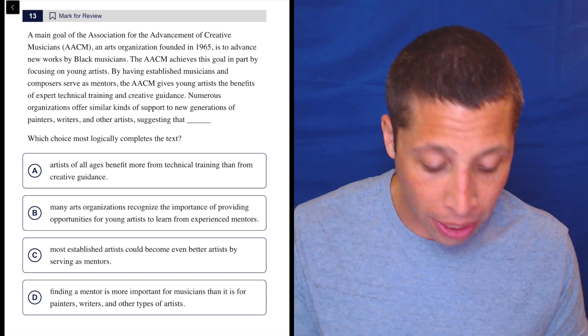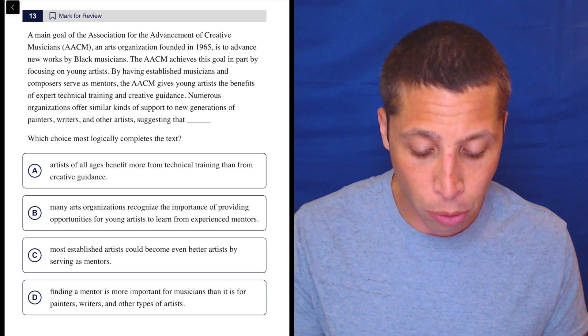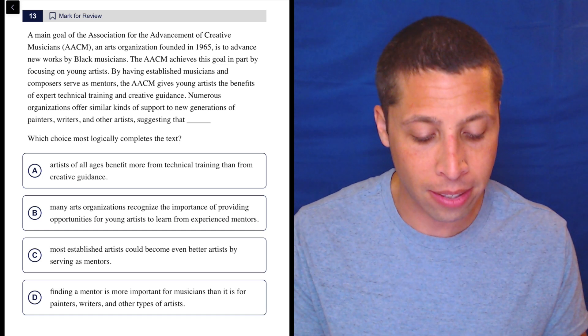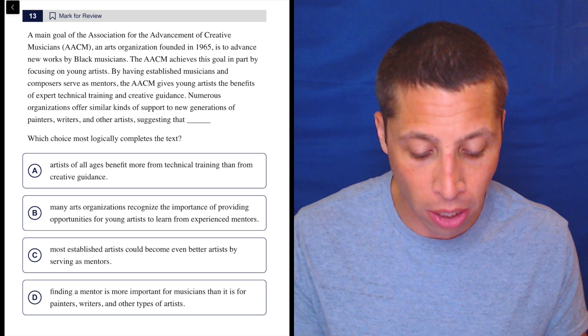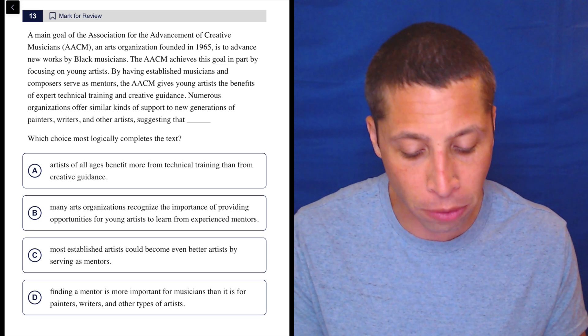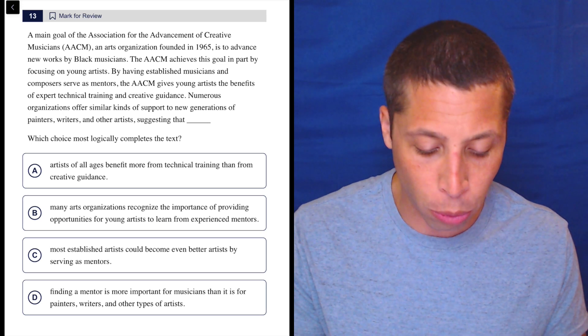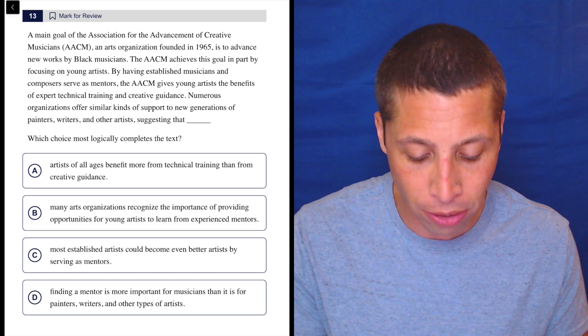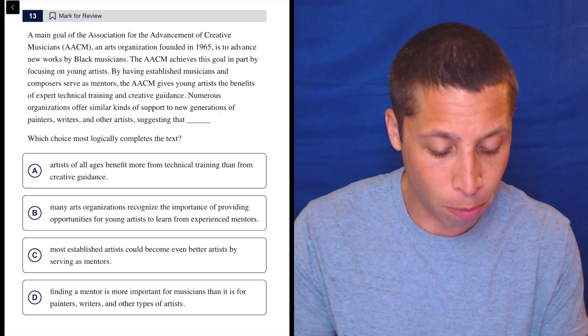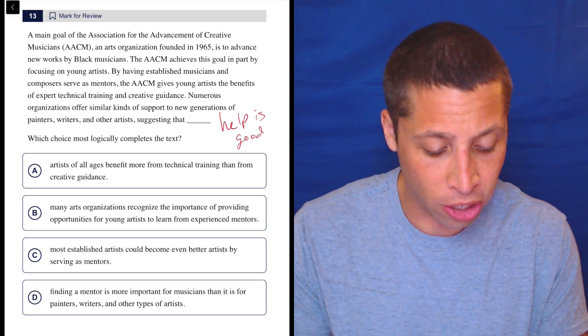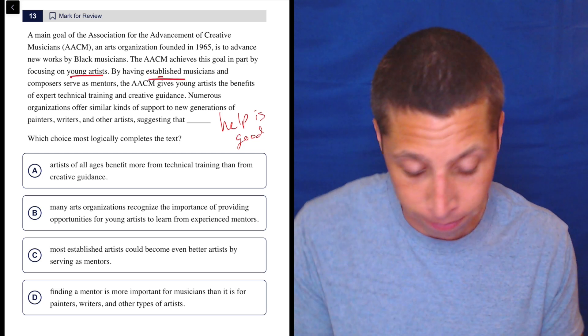So let's take a look. We got to complete the text, so just read it, get a vague sense of what's going on, and then we'll go from there. A main goal of the Association for the Advancement of Creative Musicians, an arts organization founded in 1965, is to advance new works by black musicians. The AACM achieves this goal in part by focusing on young artists. By having established musicians and composers serve as mentors, the AACM gives young artists the benefits of expert technical training and creative guidance. Numerous organizations offer similar kinds of support to new generations of painters, writers, and other artists, suggesting that help is good. It seems like a generally positive passage. You've got established people and young artists working together. Let's see what we get.